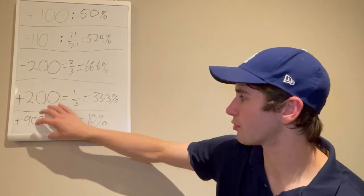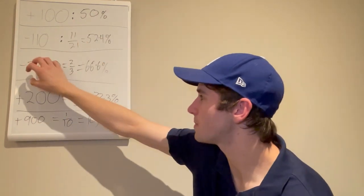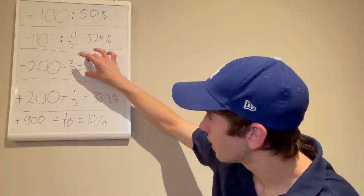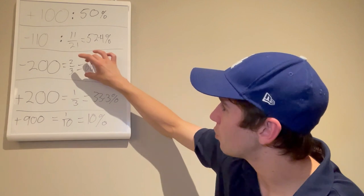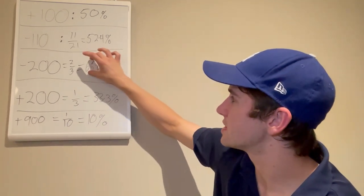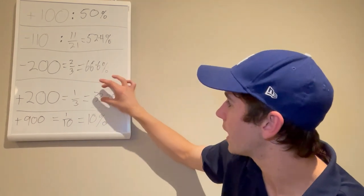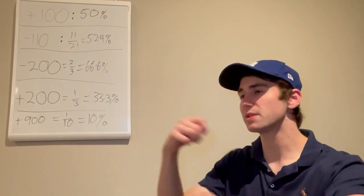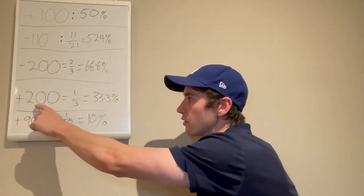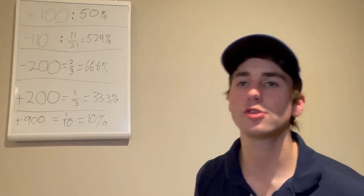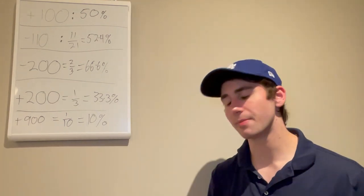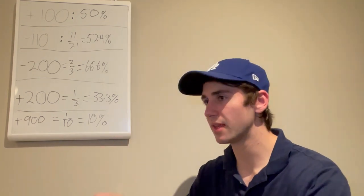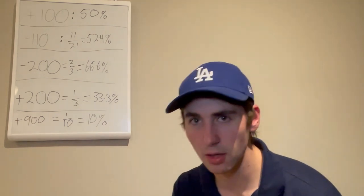So that's a brief overview of sports betting odds and their associated win percentages. It's really important because your whole goal as a sports bettor is to beat the implied win percentage. You want to find minus 200s that win over 66.6% of the time. You want to find plus 200s that win over one third of the time. If your win probability is greater than that of the associated odds, you are going to make money in the long run. It's just math, it's just statistics.